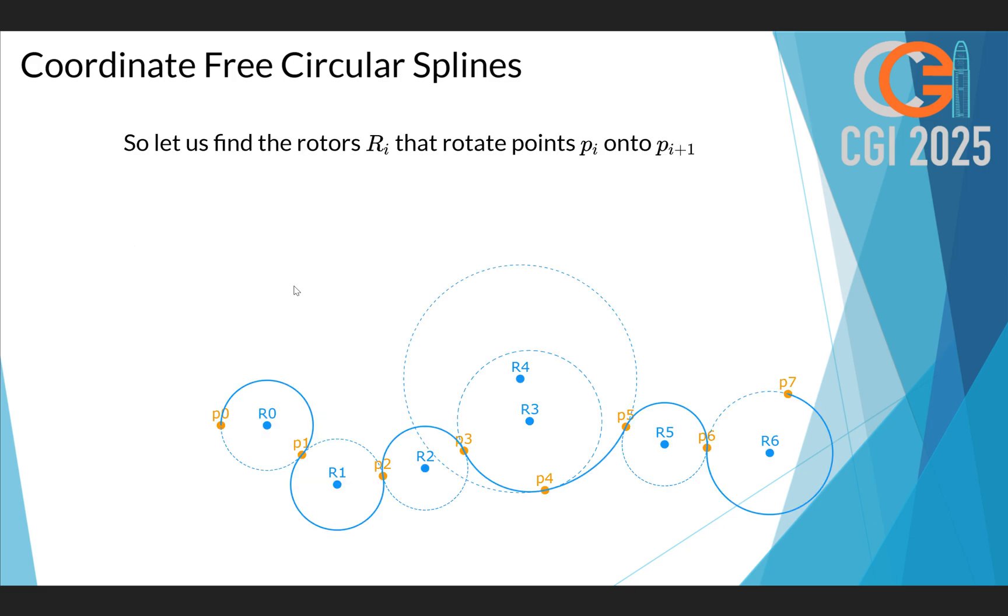And so that's how we will approach this problem. We will try to find the rotors Ri that rotate points Pi to Pi plus 1. So we want to find rotor R0 that rotates P0 to P1, R1 that rotates P1 to P2, and so on.